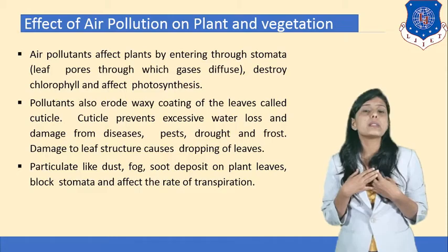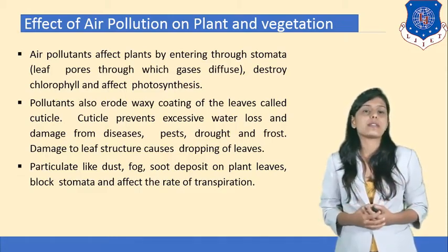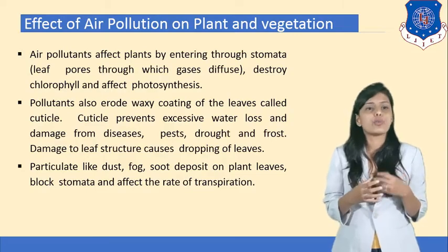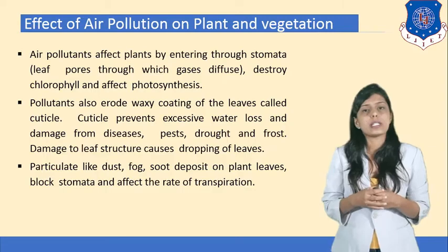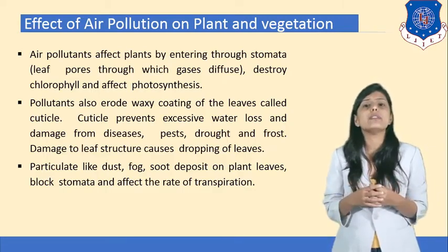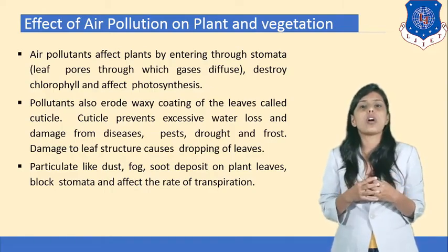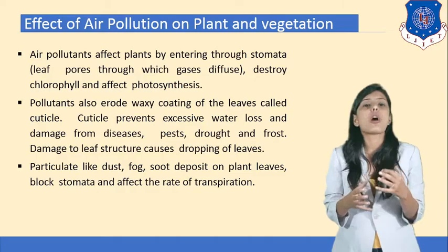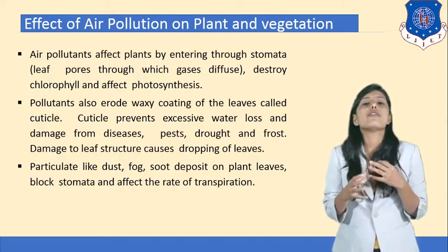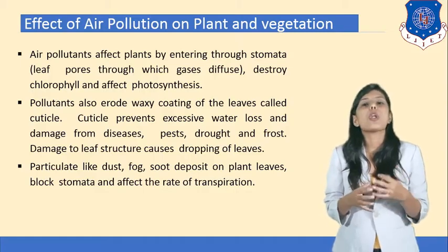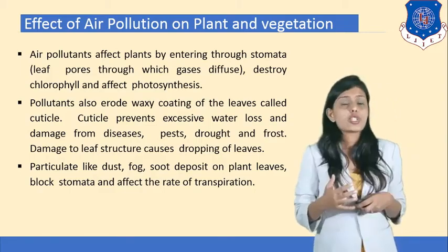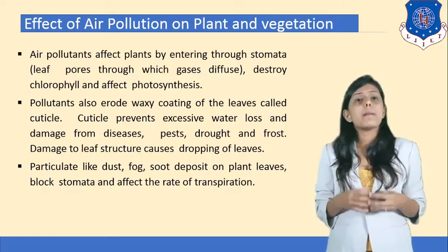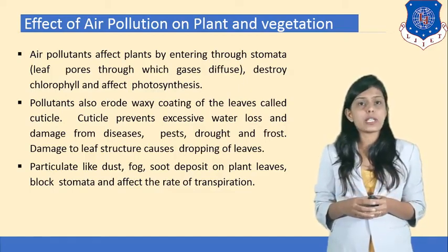Air pollution is not only affecting human beings but also plants and vegetation. Air pollutants enter plants through stomata — leaf pores through which gases diffuse — and destroy chlorophyll, affecting photosynthesis. Pollutants also erode the waxy coating of leaves called the cuticle, which prevents excessive water loss and damage from debris, pests, drought, and frost. Damage to leaf structure causes dropping of leaves. Particulates like dust, fog, and soot deposited on plant leaves block stomata and affect the rate of transpiration.